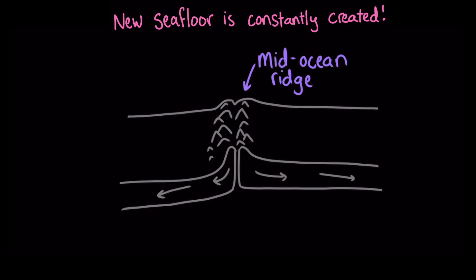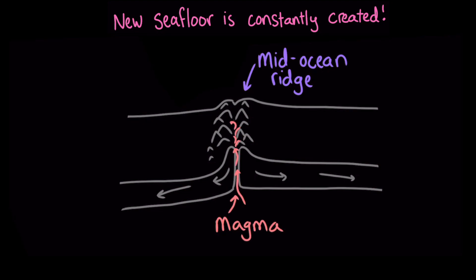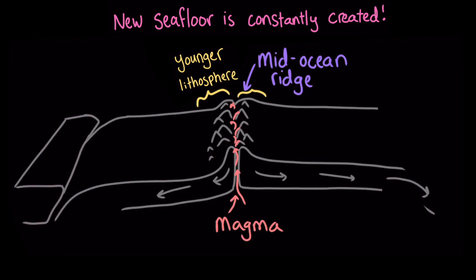As the plates move apart at mid-ocean ridges, magma moves up, cools, and forms a new, younger lithosphere. You can think of this process like a really slow conveyor belt. New ocean seafloor is made at the ridges and moves away from them over millions of years. This means that the oceanic crust that is closest to the ridge is the youngest, and as it moves away from the ridge, the crust gets older and older.